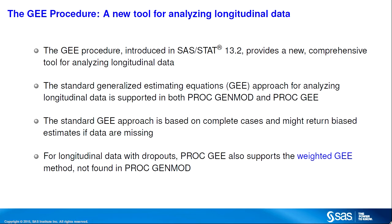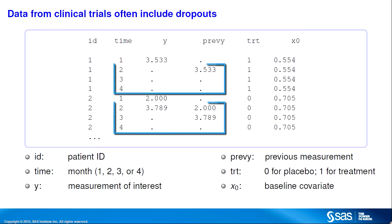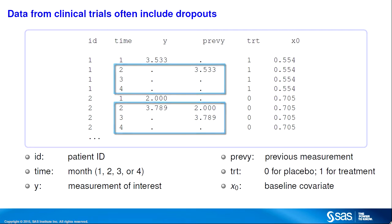To illustrate the GEE procedure and show how it compares to PROC GenMod, we'll analyze the following simulated data with both procedures. In this example, subjects were observed once a month for four months. The variable ID identifies the subjects, and the variable time indicates in which month the observation was taken. For observations after the first month, the previous response is recorded in the variable PREVY. As is typical of data from clinical trials, there are a number of missing observations due to dropouts. In this example, only 28% of the subjects have complete cases.